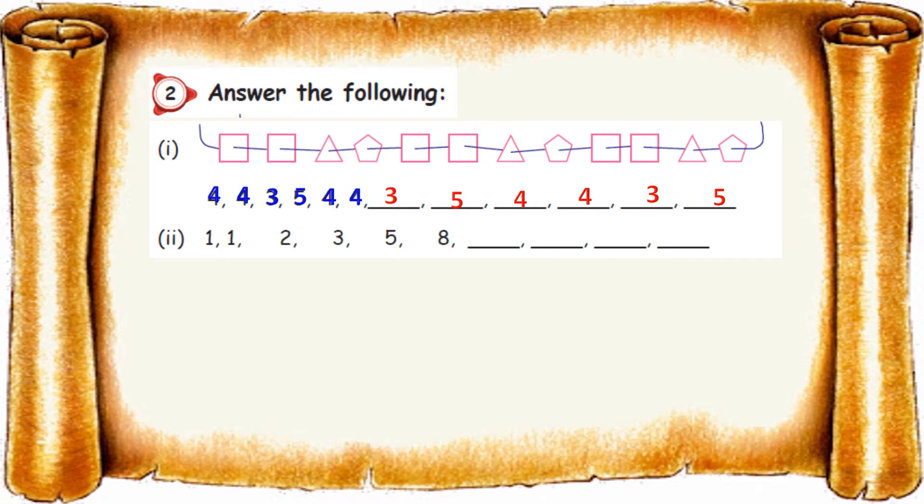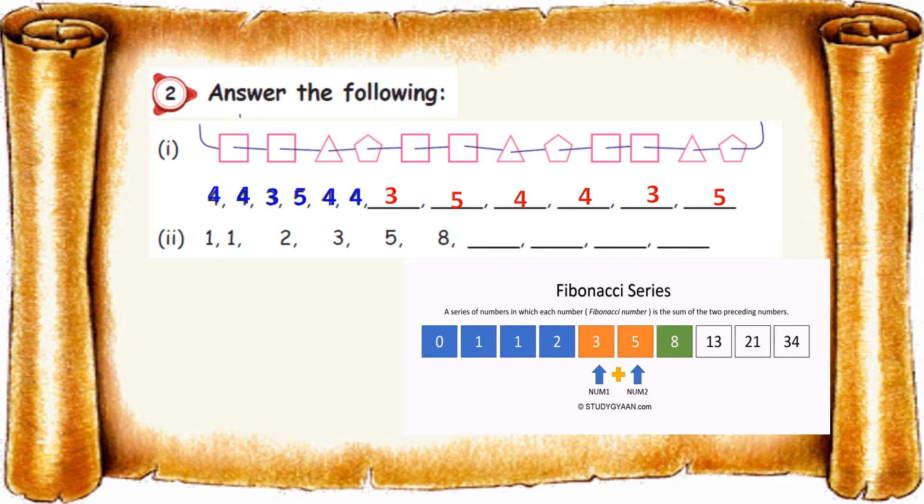So second one is very important. But it's very easy. It has some name also. You might have learned in the higher classes. What will be the name? Its name is called Fibonacci series. A series of numbers in which each number is the sum of the two preceding numbers.